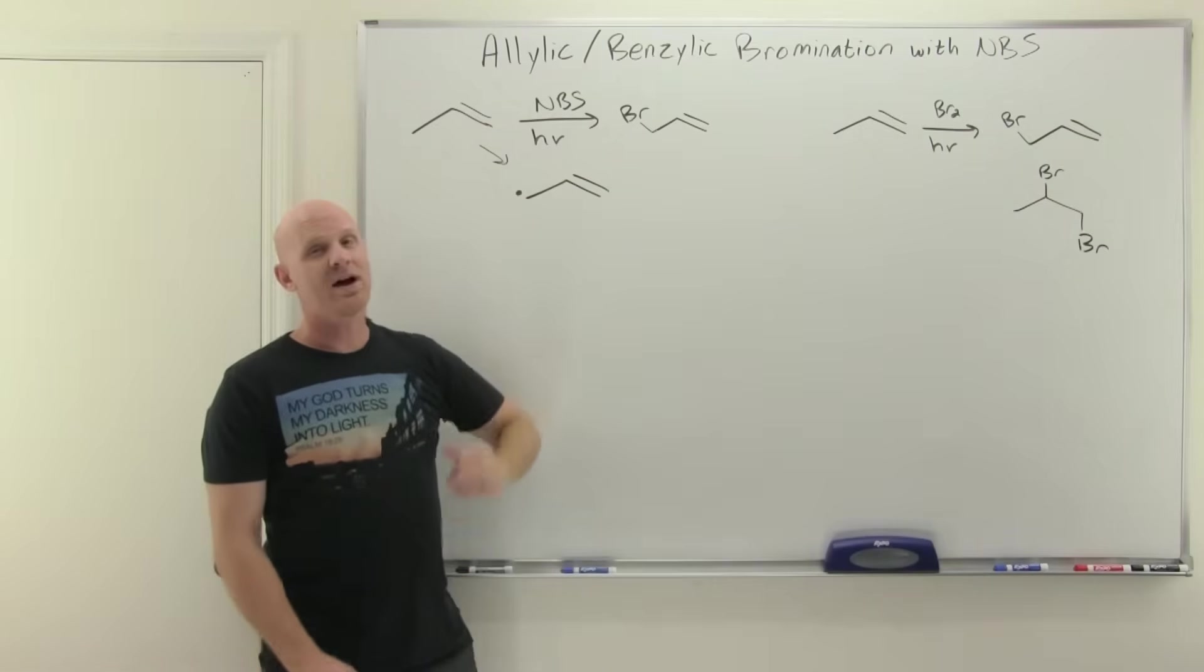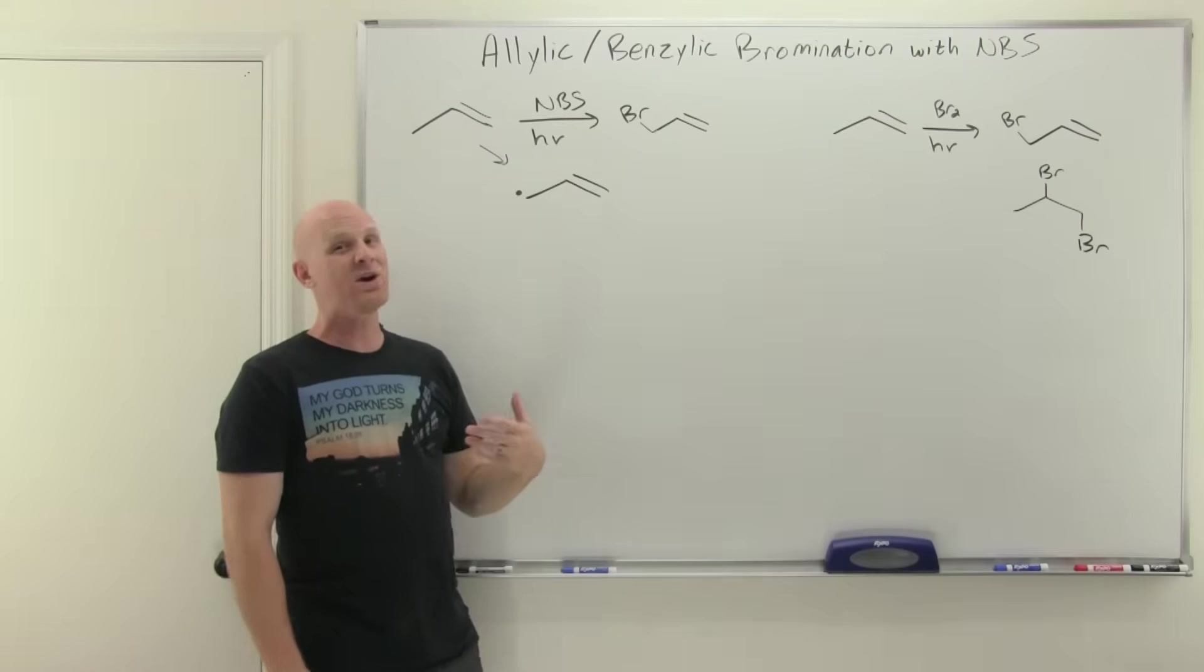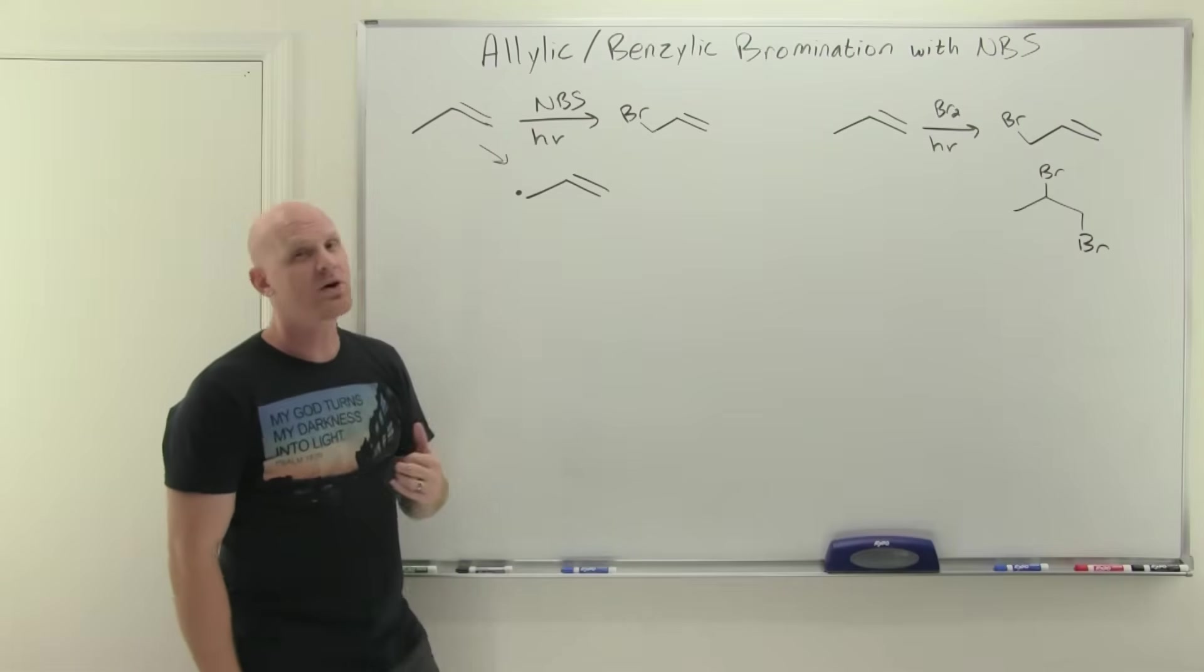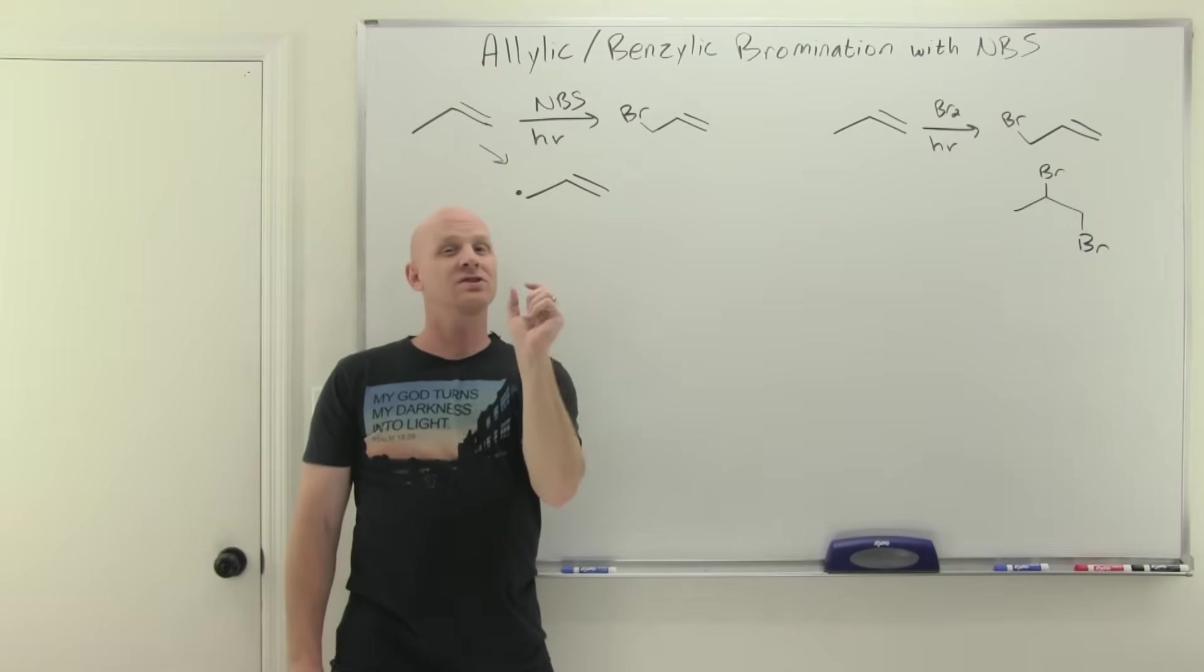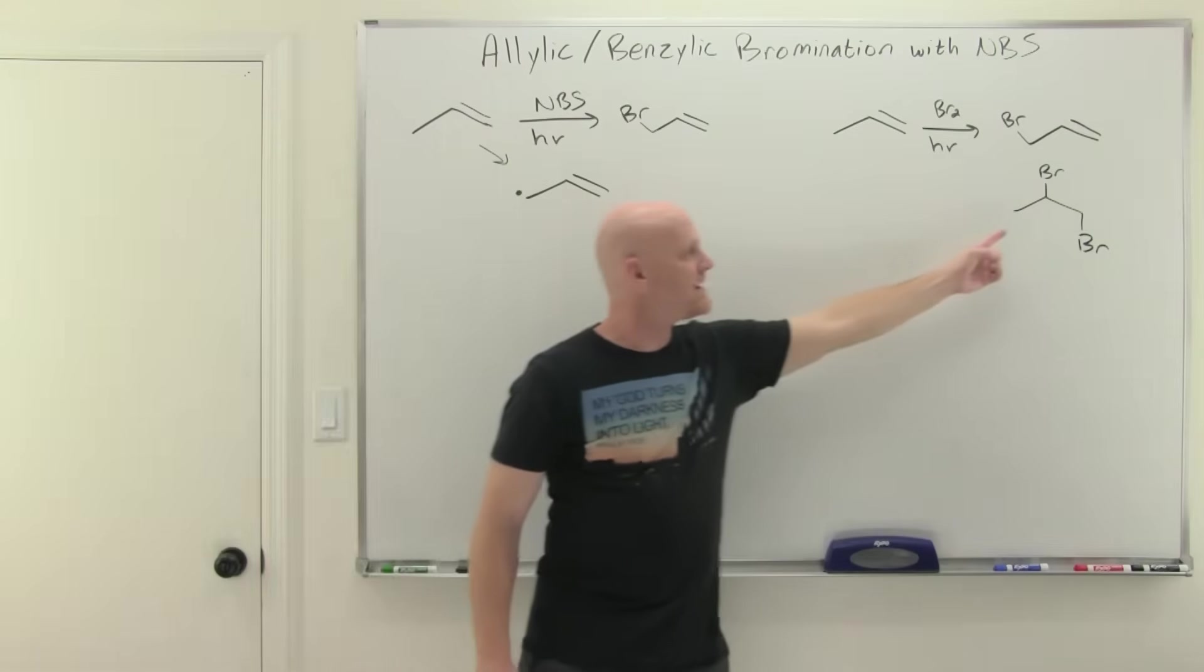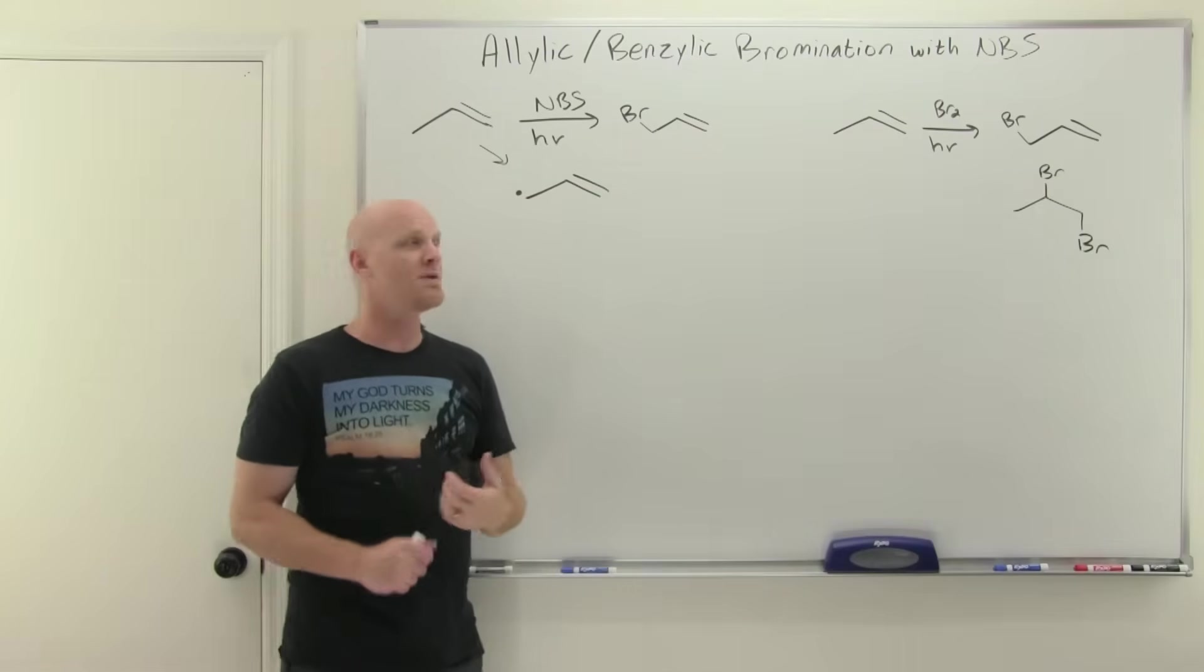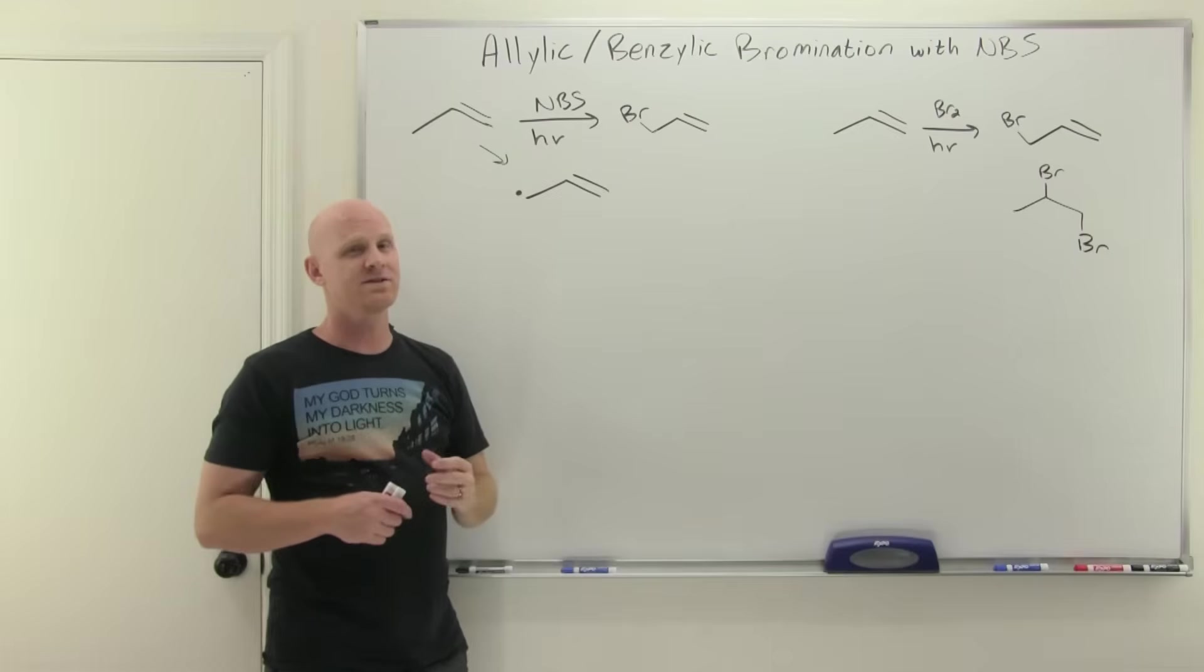It turns out with NBS, we don't have to worry about that. For one, we don't actually use any BR2 in the reaction. So at least we don't add any BR2 in there. We're actually going to create our own BR2 using the NBS that we provide, and we're going to create it in such a low concentration that we never get this lovely alkene addition side product. The BR2 is created in such a small amount that any of it that's created only undergoes allylic or benzylic bromination.